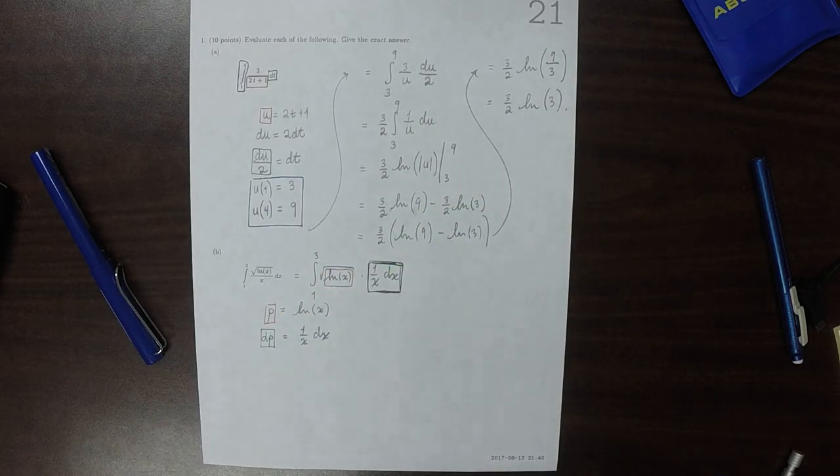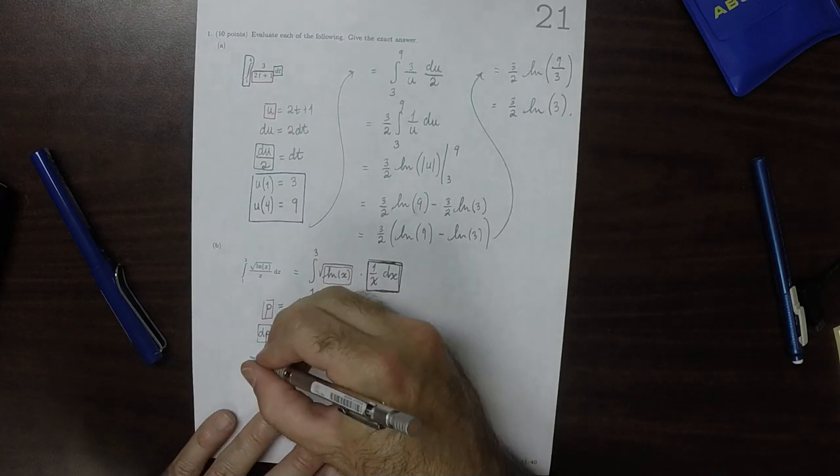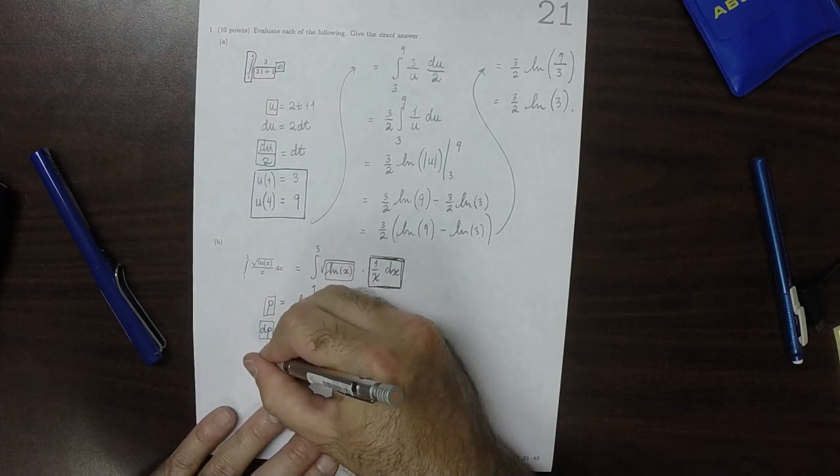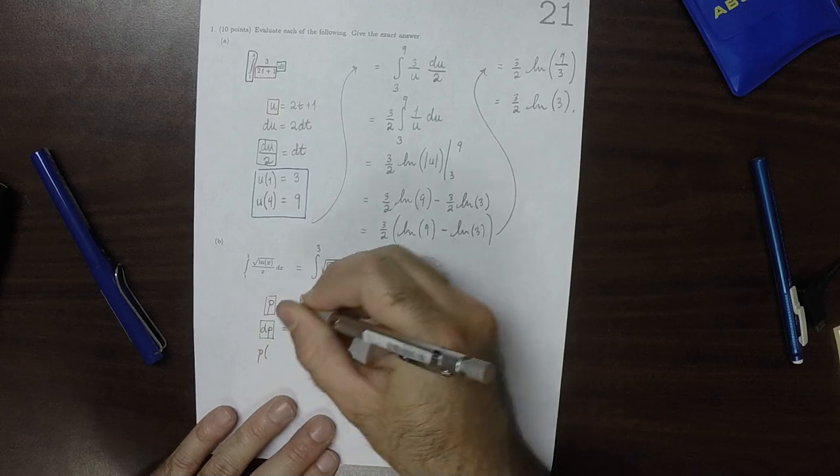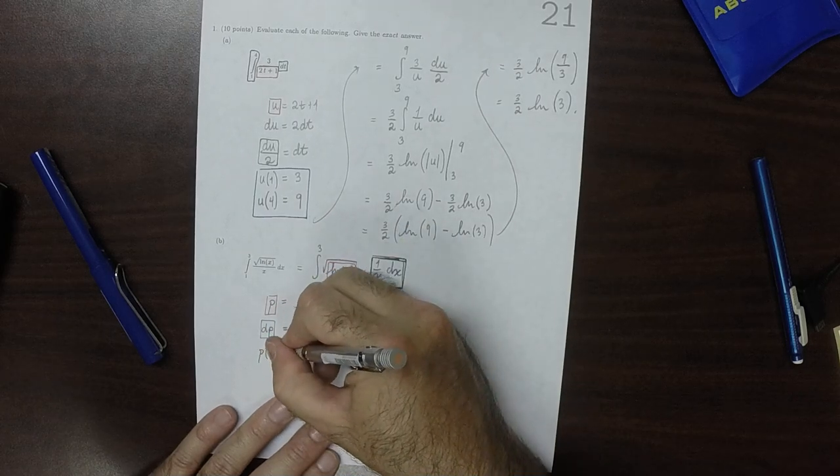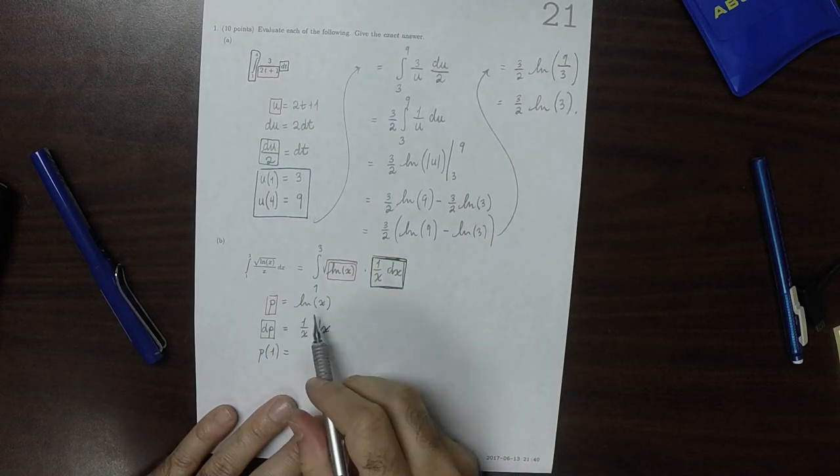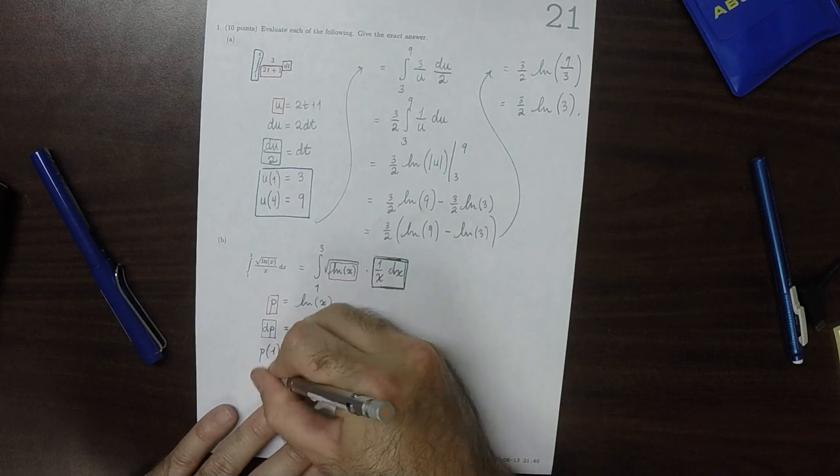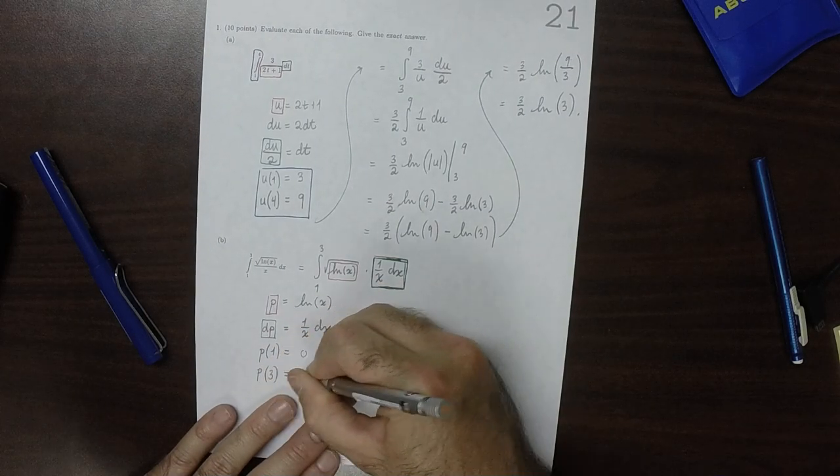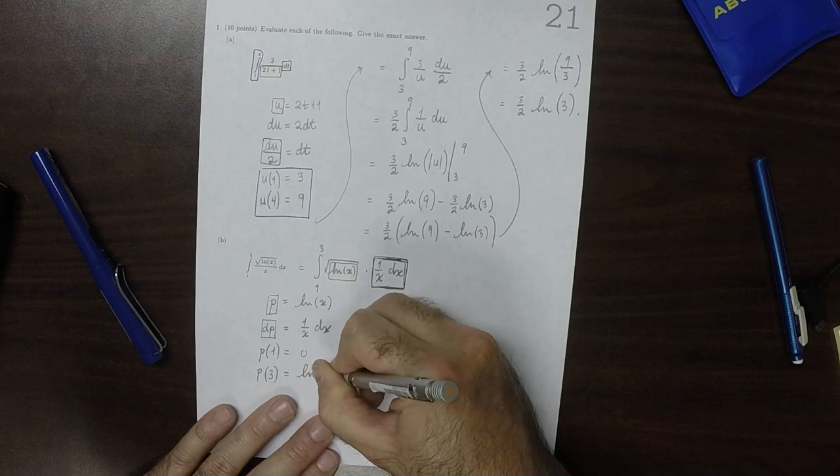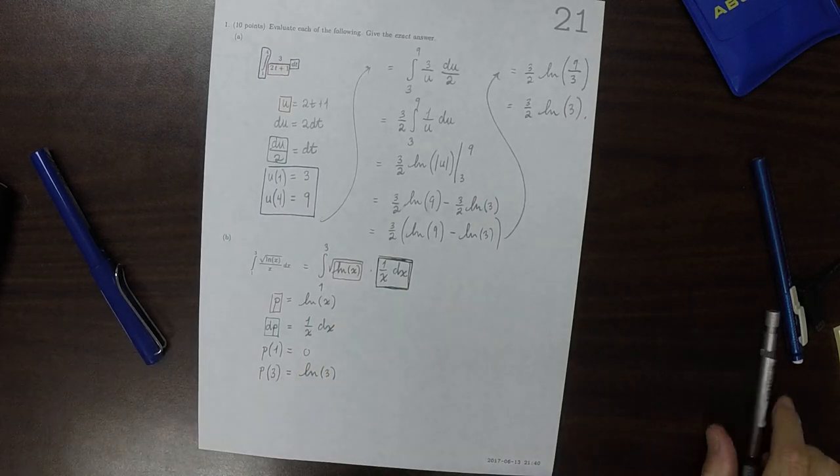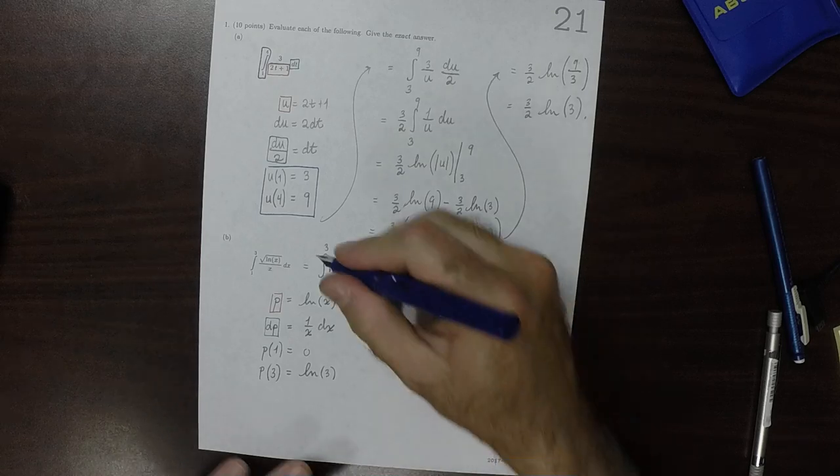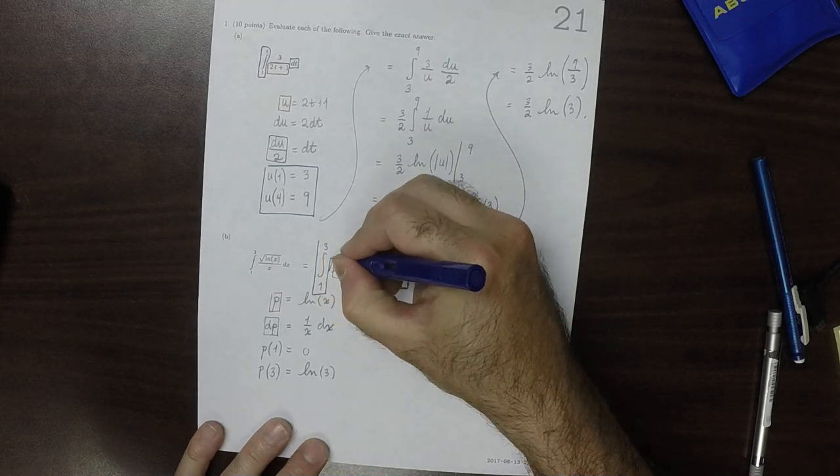And now we need to cover the limits, which is to say, what is the value of p when x is 1? Well, the logarithm of 1 is 0, and the value of p when x is 3 is the logarithm of 3. So this blue information will cover the limits.